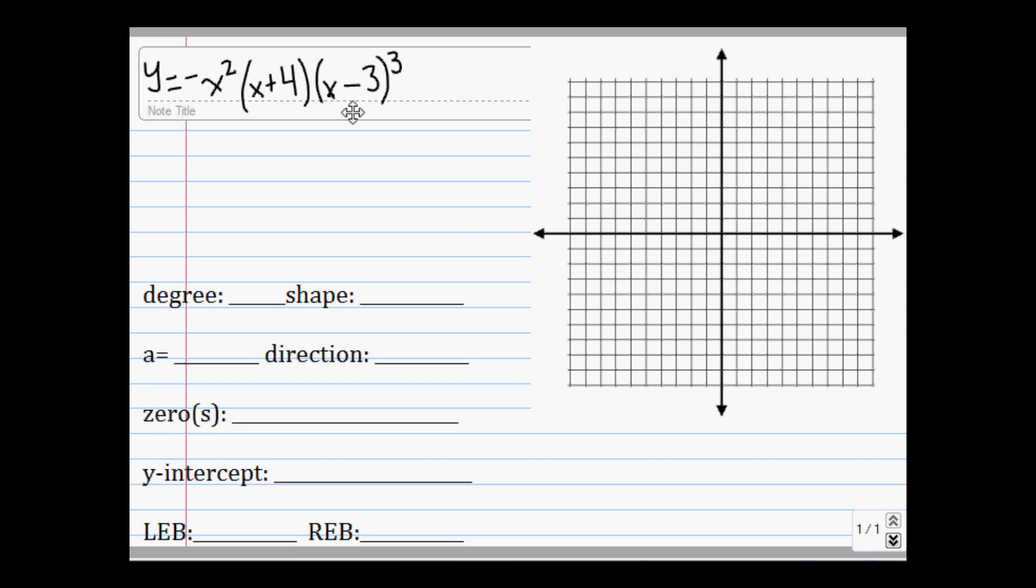So already up here I've got my equation, y equals negative x squared times x plus 4 times x minus 3 to the third. So this graph will involve all the different steps. We'll need to find all our pieces of information and we'll need to analyze and graph a few bounces and slides. So, first, let's get started.